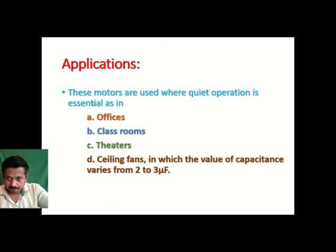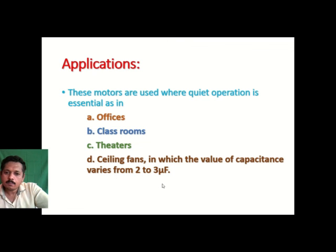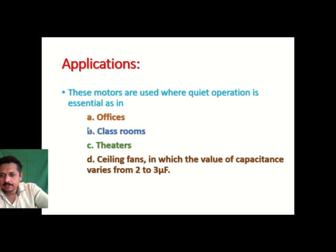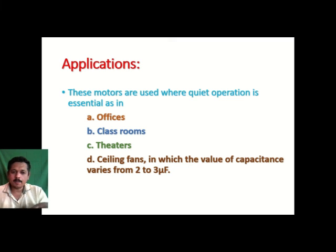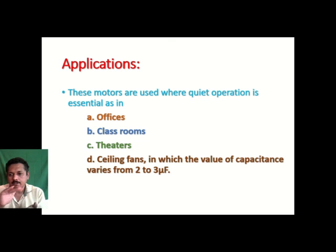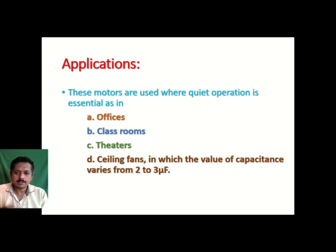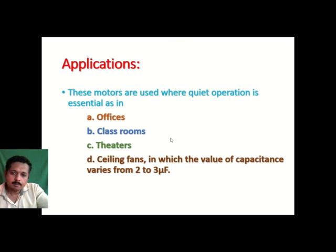These motors are used where quiet operation is essential: offices, classrooms, theatres, and ceiling fans, where the capacitor value ranges from 2 to 3 microfarads. They can also be used for refrigerators and compressors. One important limitation is that the starting torque is moderate — not as high as the capacitor start motor or capacitor start and run motor. Its starting torque is less than those two types, but its operation is very smooth, which is why it can be used with a small capacitor of 2 to 3 microfarads.